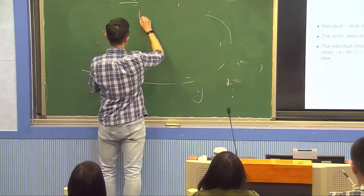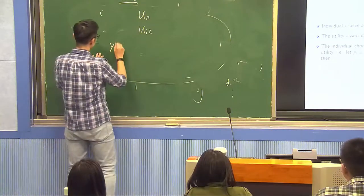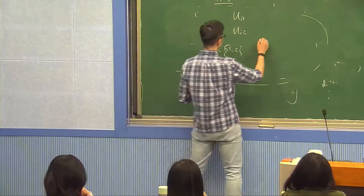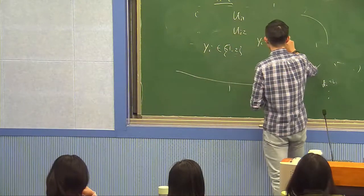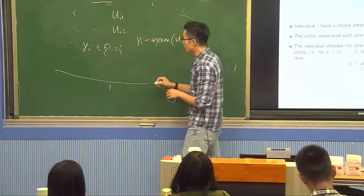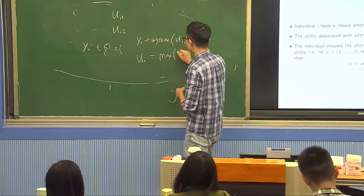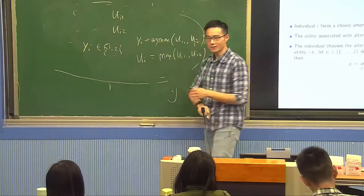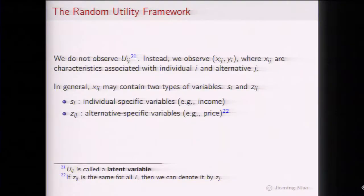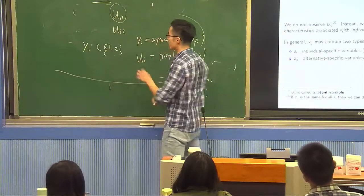Suppose there are two choices: 1 and 2. Individual i has utility ui1 and ui2. The choice yi equals 1 if ui1 > ui2, else 2 — argmax of the two. The final utility is max(ui1, ui2). This is the basic random utility framework that gives us discrete choice models. Different discrete choice models amount to different specifications of how we model uij.